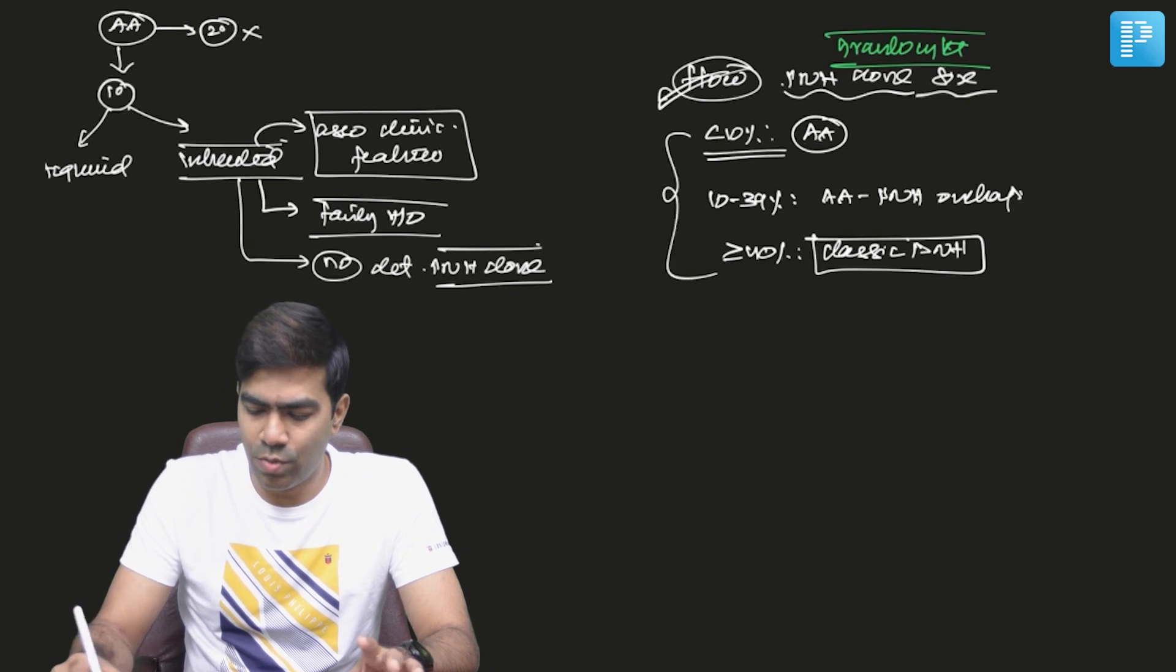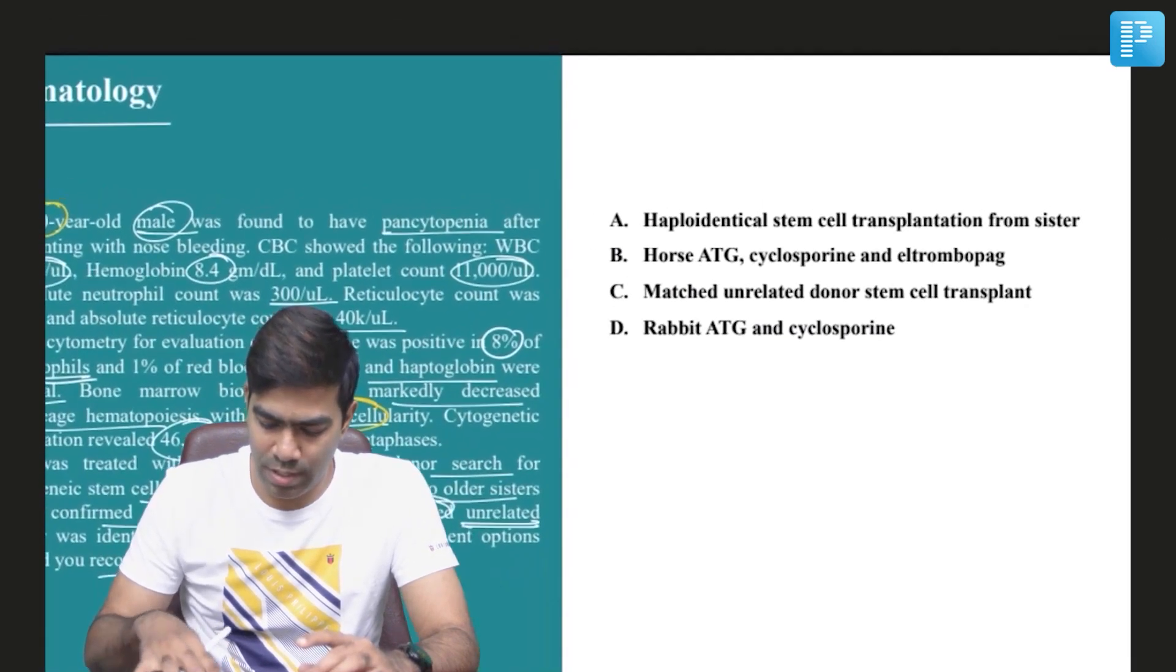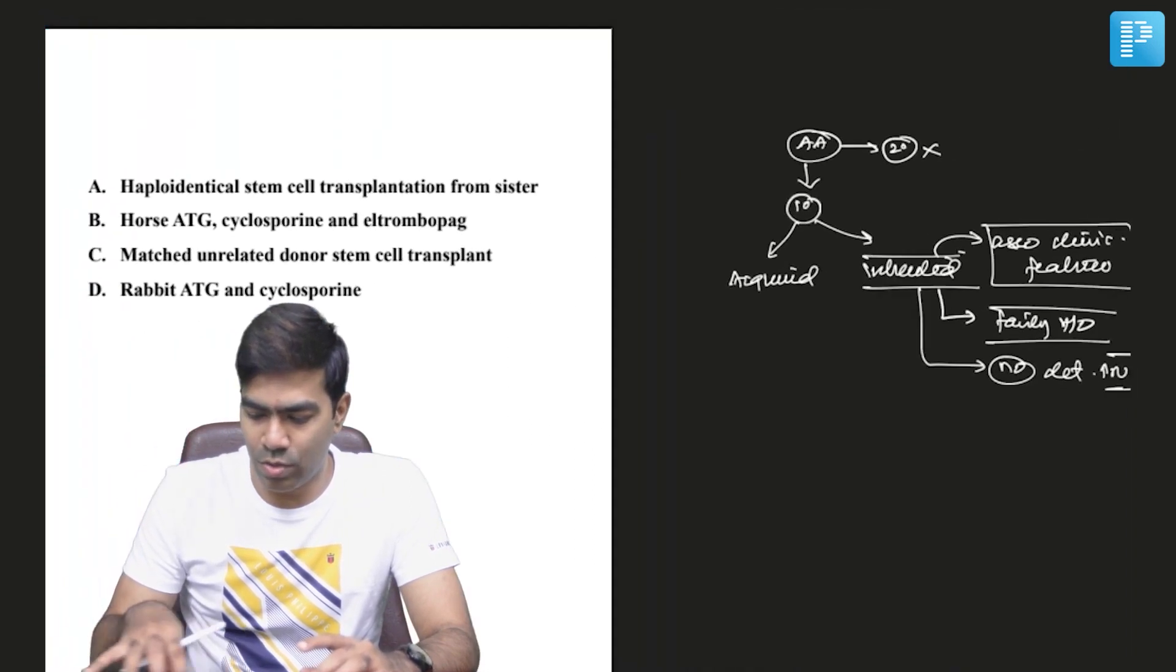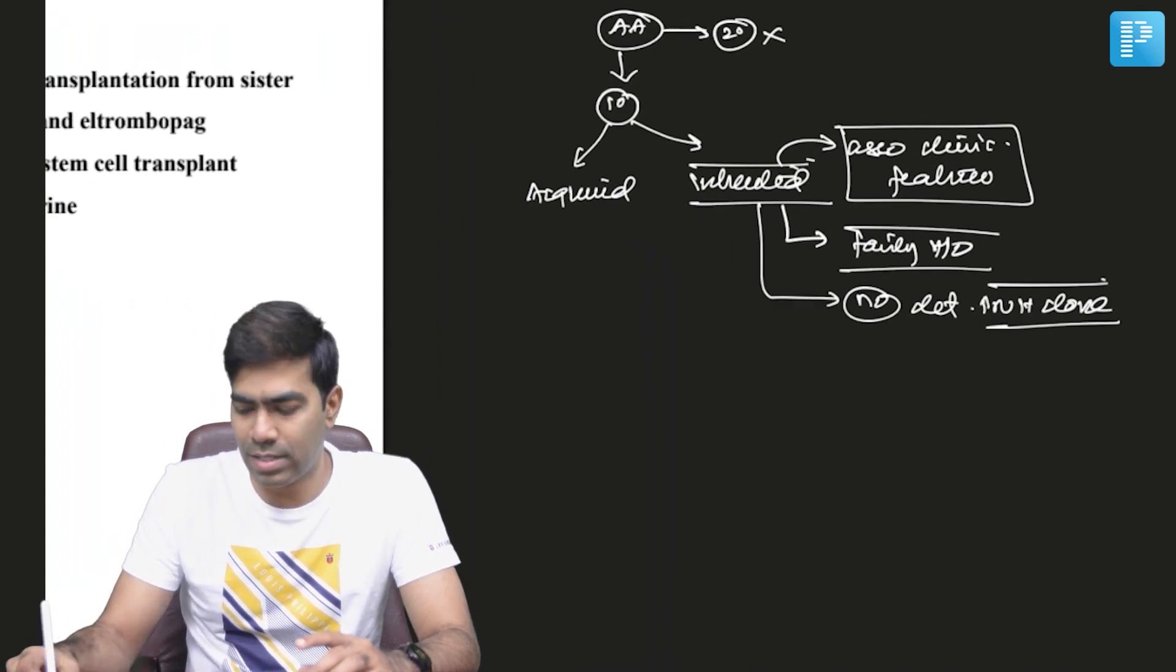So that is why flow is going to be very, very helpful in telling you what is the type of disorder that you're dealing with. Because this patient is having only 8% PNH clone size, I can clearly say this is not an inherited aplastic anemia and this must be an acquired primary aplastic anemia.